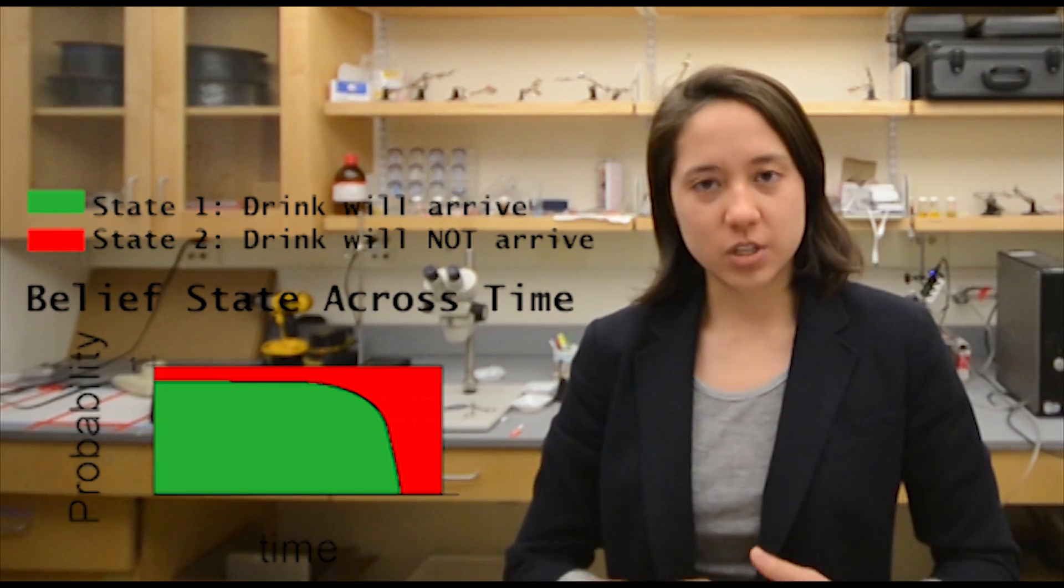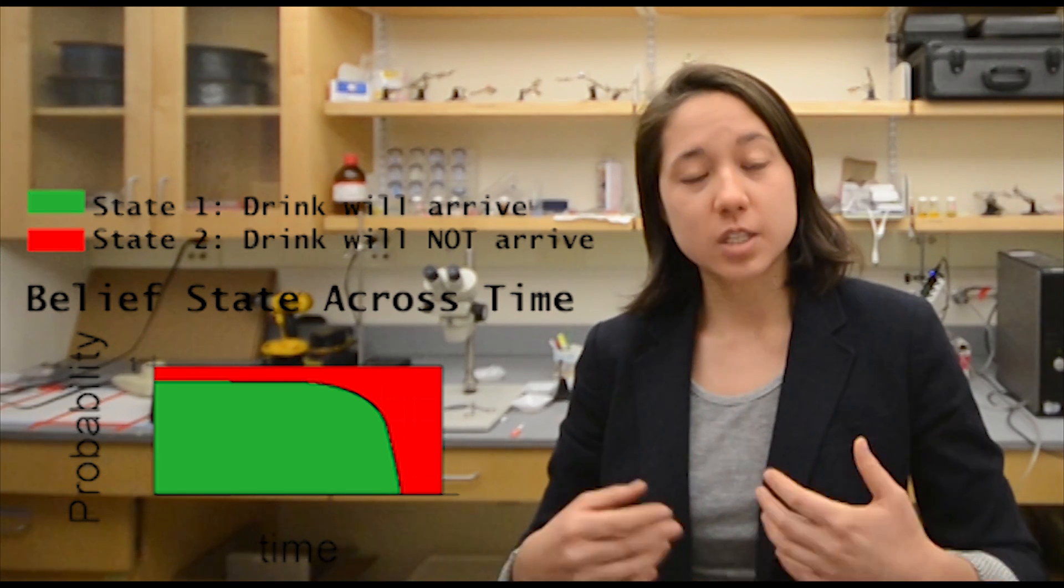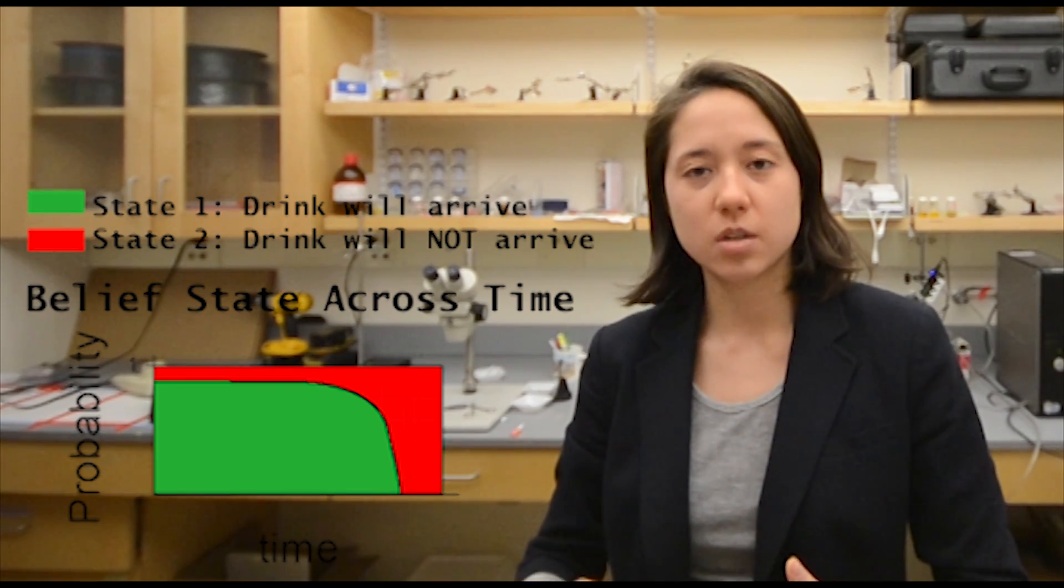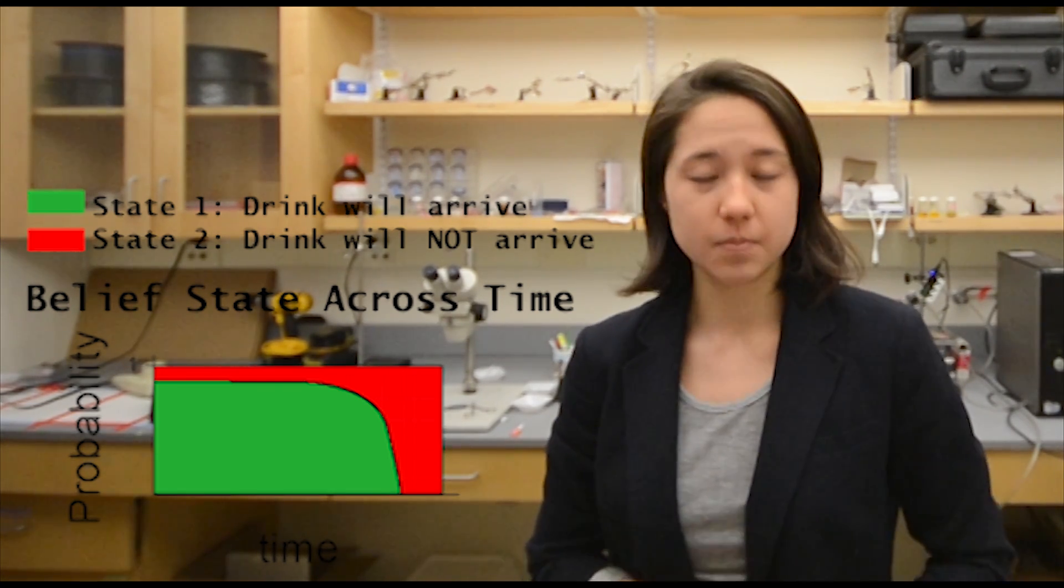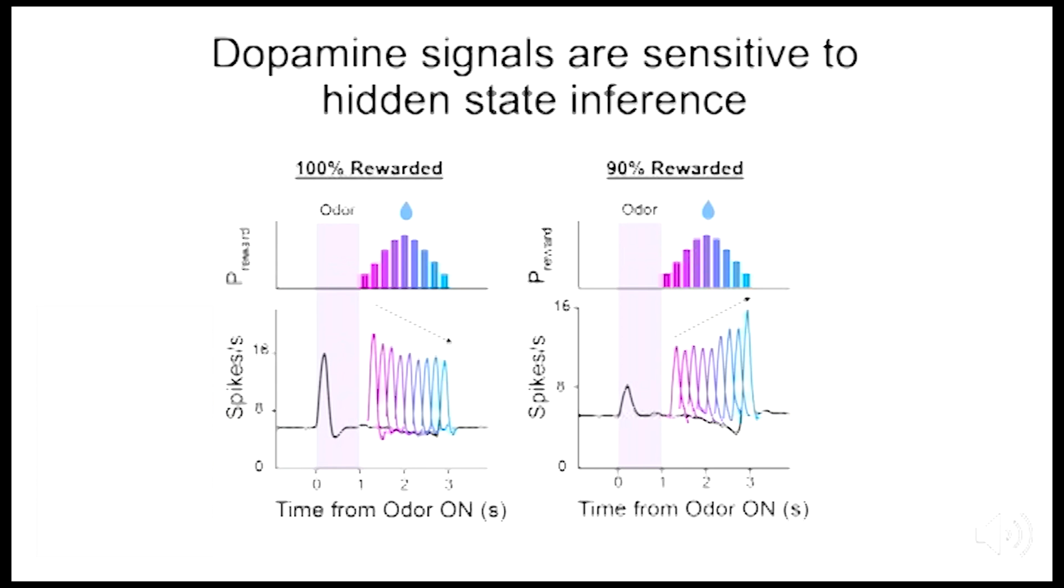Dopamine signals, which are suppressed by reward expectation, are sensitive to the belief state. We previously recorded dopamine neurons during two classical conditioning tasks that varied the timing of reward delivery relative to cue onset. In the 100% rewarded task, dopamine signals were largest for early rewards as if expectation increased as a function of time.